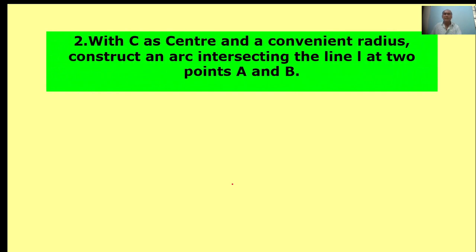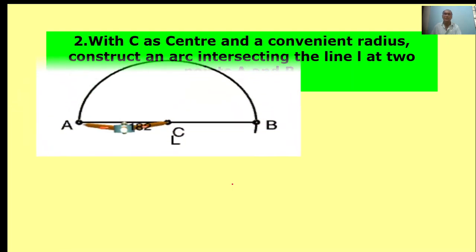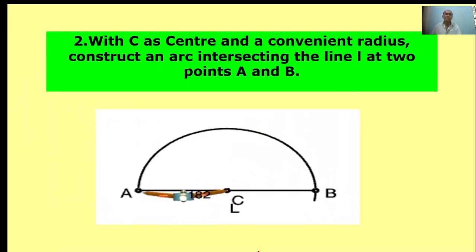With C as center and convenient radius, construct an arc intersecting the line L at two points A and B. First, center point C, take a convenient radius to draw one arc. This arc intersects at point A and intersects at point B.